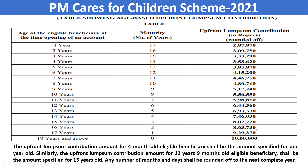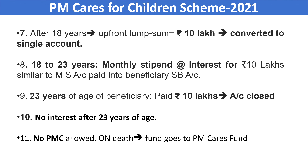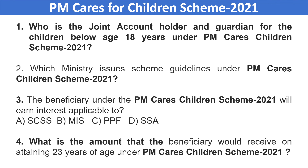Finally, the child will receive 10 lakh rupees at age 18, which stays invested for five years, and this is all about PM Cares for Children's Scheme. Now four questions for you to answer in the comment section: Who is the joint account holder and guardian for children below 18 years under PM Cares for Children Scheme 2021? Which ministry issues scheme guidelines under PM Cares for Children Scheme 2021? The beneficiary earns interest applicable to — A. SCSS, B. MIS, C. PPF, D. SSA. What is the amount the beneficiary receives on attaining 23 years of age under PM Cares for Children Scheme 2021?